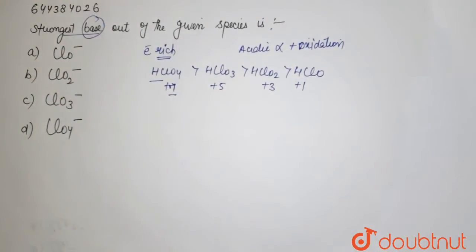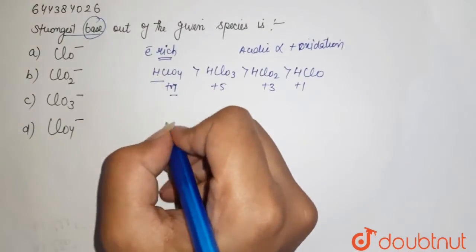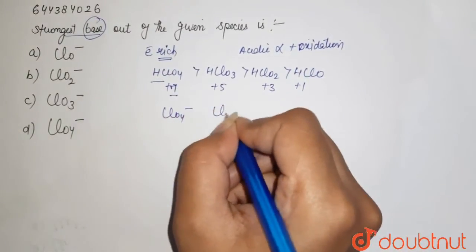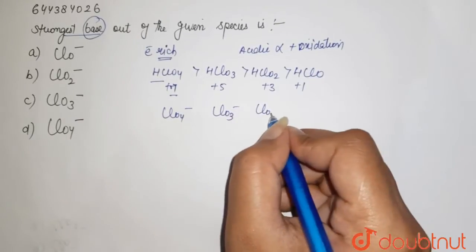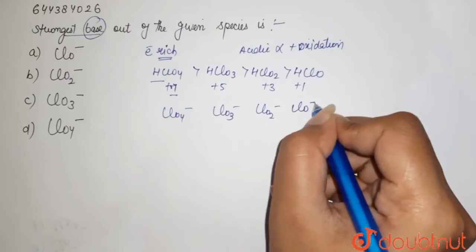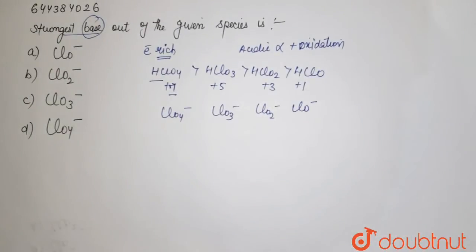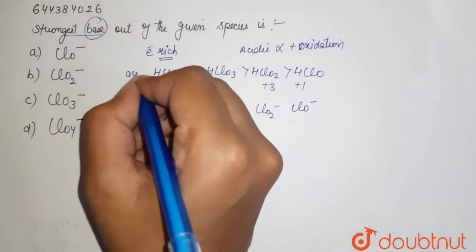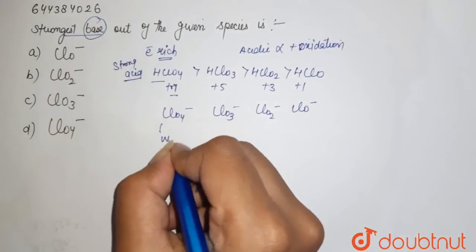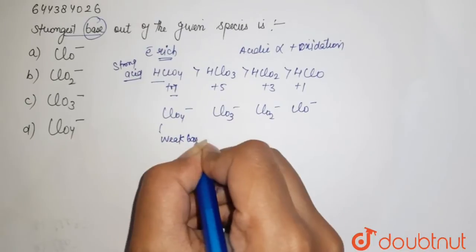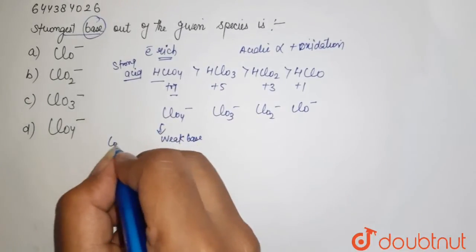And we know the corresponding conjugate bases: here it is ClO4-, ClO3-, ClO2-, and ClO-. So when the acid is strong, this is the strong acid, ultimately weak is the base, that is the conjugate base.